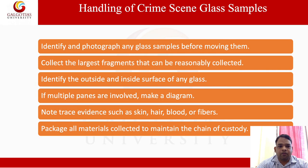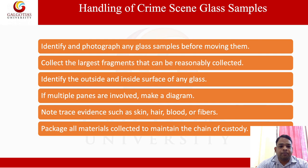Handling of the crime scene glass sample. Identify and photograph any glass sample before moving them. Collect the largest pieces that can usually be collected. Identify the outside and inside surface of any glass. If multiple panes are involved, make a diagram. Note trace evidence such as skin, hair, blood or fibers. Package all materials collected with a label, seal or crystal container.